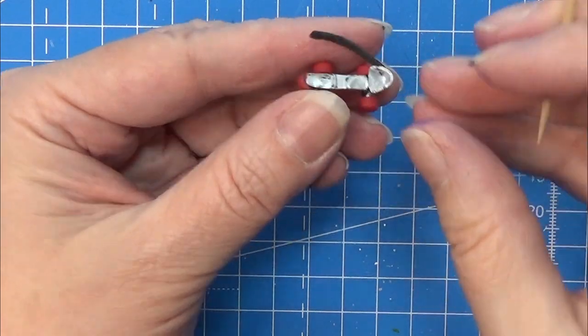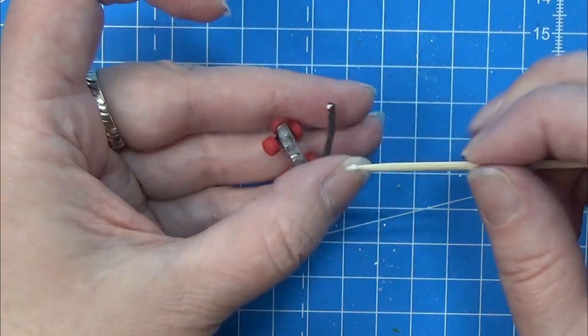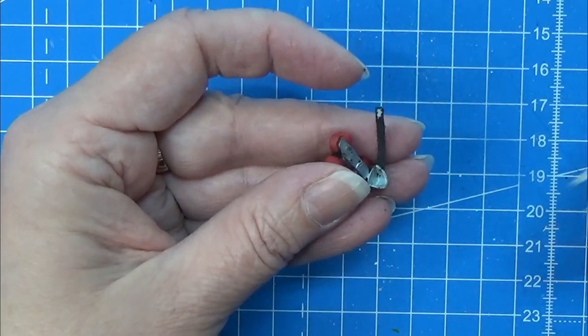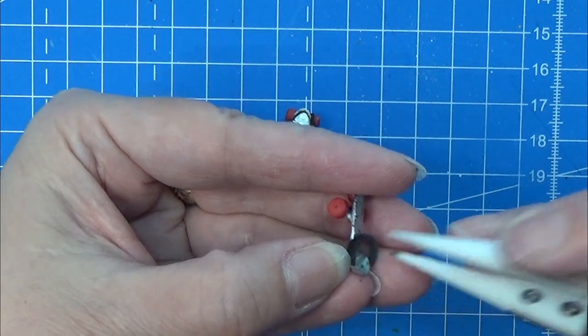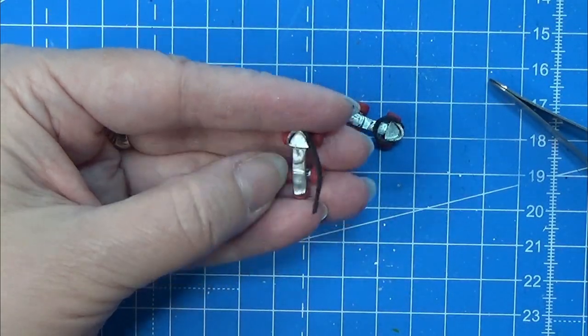When that has dried, I am using my tacky glue again on the other end of the strip, and then I am bending this strip and placing it on the other side of the heel cap. Again, I'm doing this on both of these.